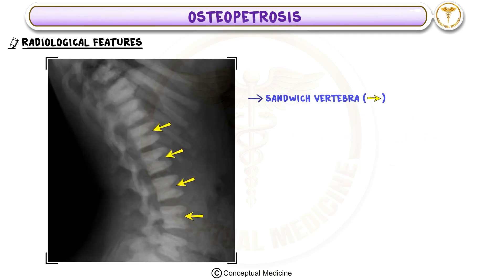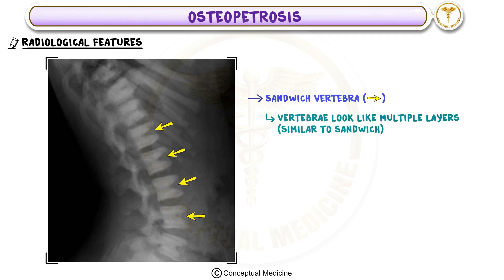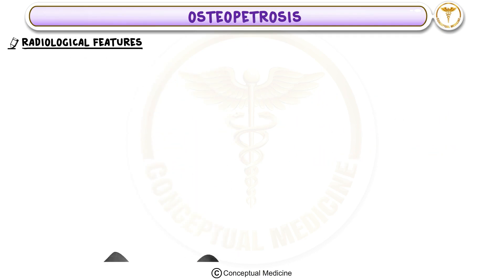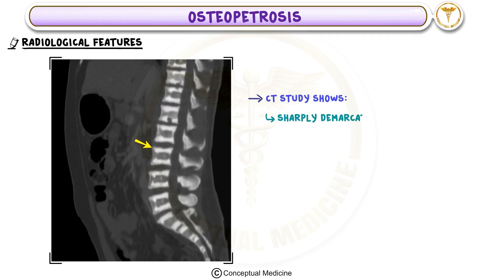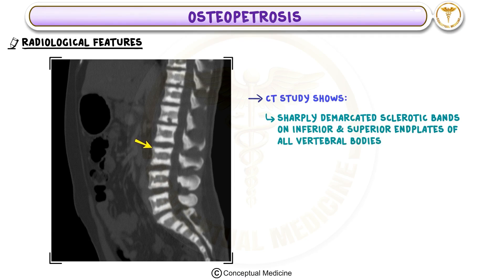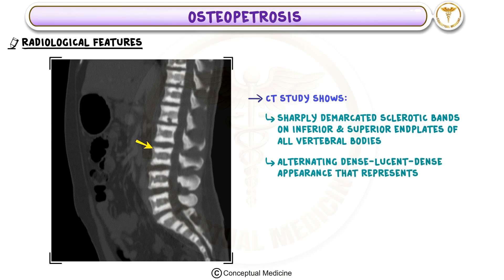Radiological Feature 2: Sandwiched Vertebra. The vertebrae look like they have multiple layers, similar to a sandwich. This is a key radiological feature of osteopetrosis and helps to confirm the diagnosis. The CT study shows sharply demarcated sclerotic bands on the inferior and superior end plates of all vertebral bodies, with an alternating dense-lucent-dense appearance that represents accumulations of excess osteoid.